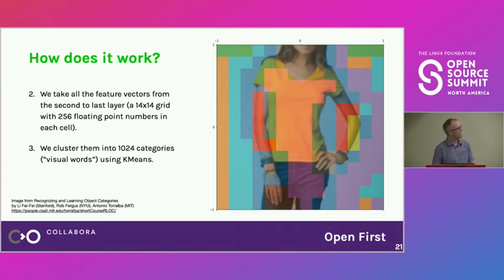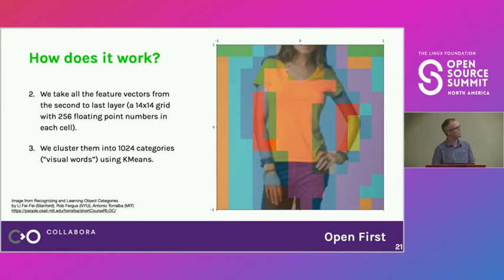This works quite well — you can see the t-shirt is a single cluster, each color represents a different cluster, hands and arms are clustered together, and the face is also grouped as similar. The model handles these really well.